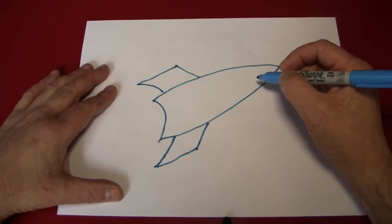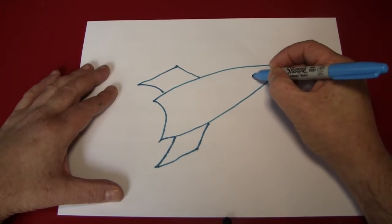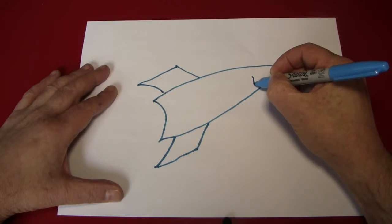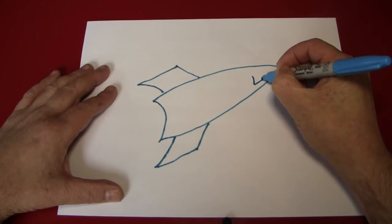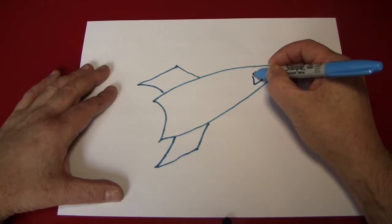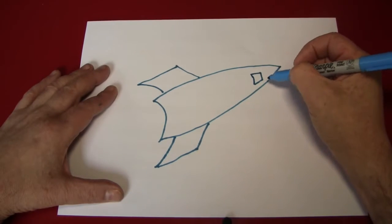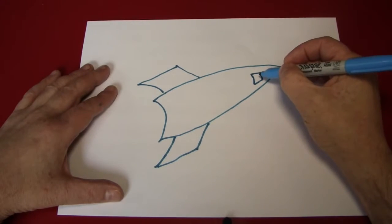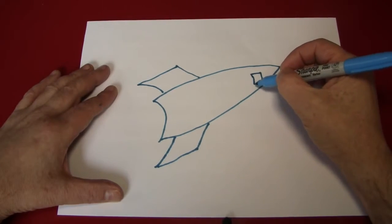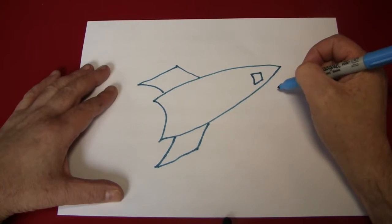Next, let's place a little window up here in the nose cone so we know where the astronauts are and so that they can look out into space. I like to make the windows on a spaceship square, just like in an airplane.